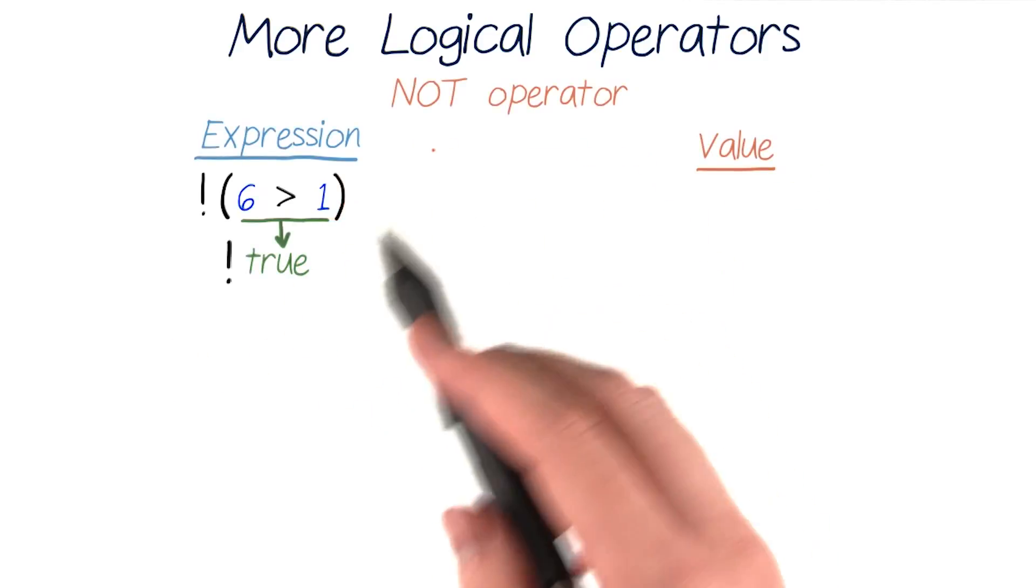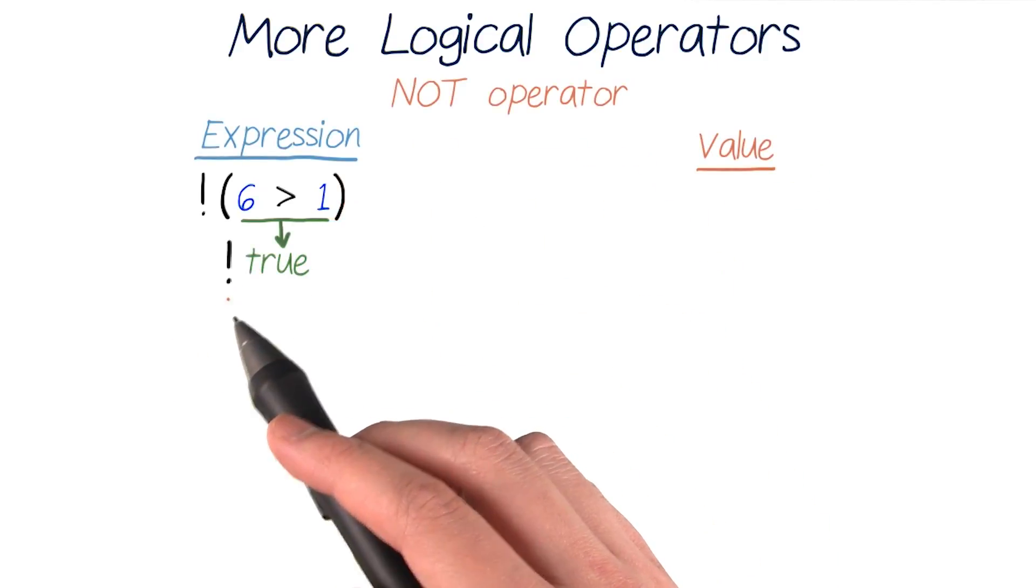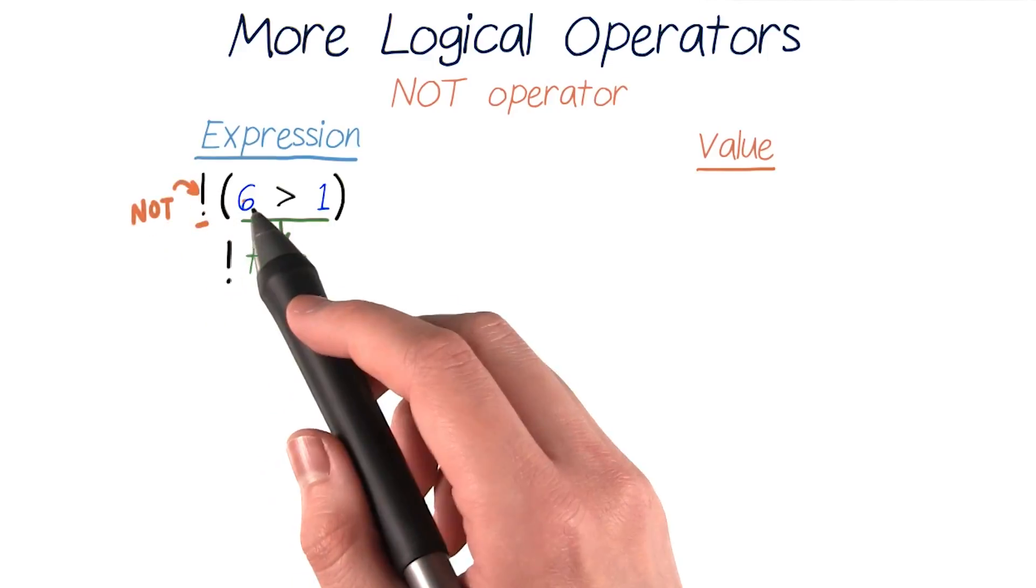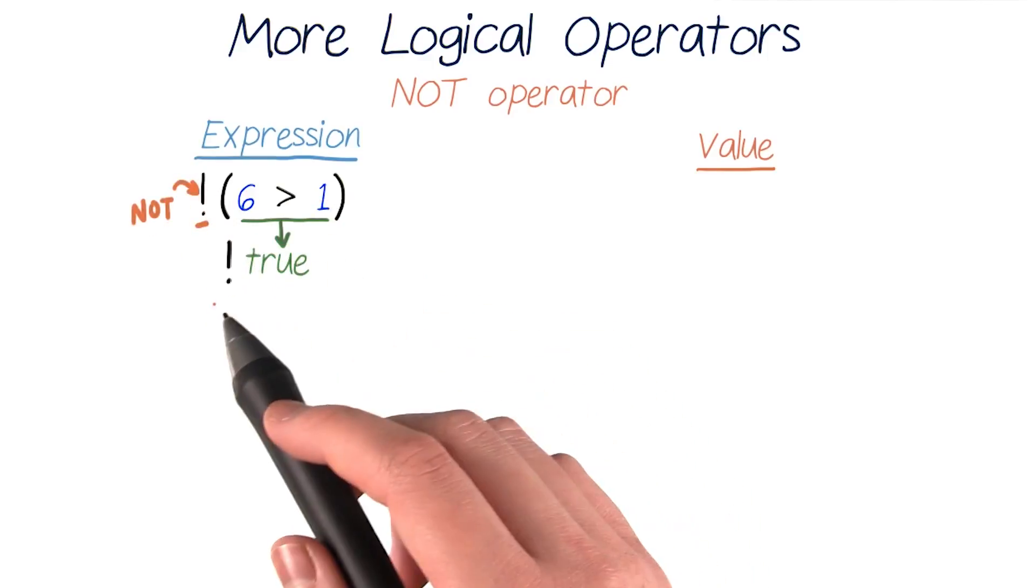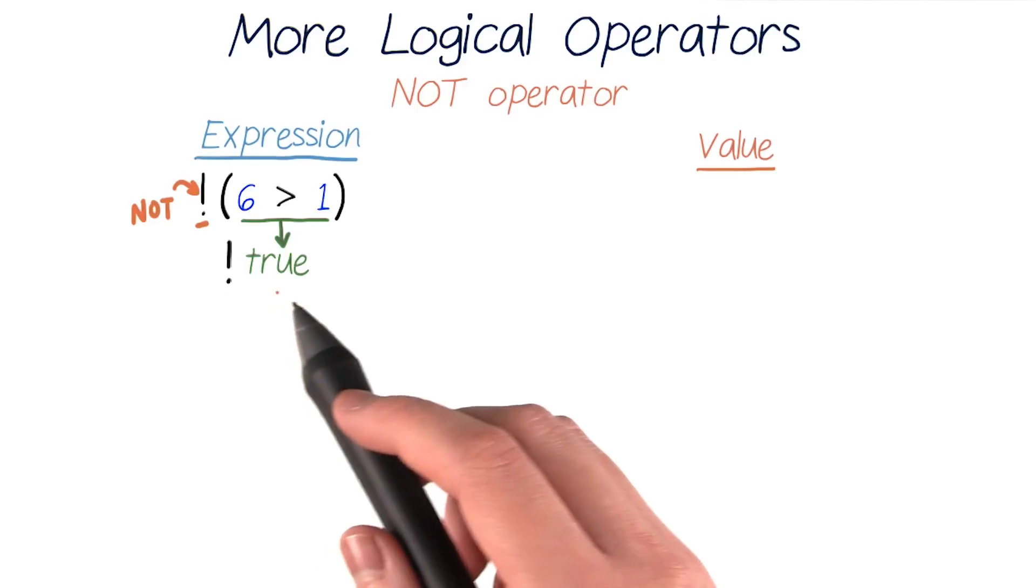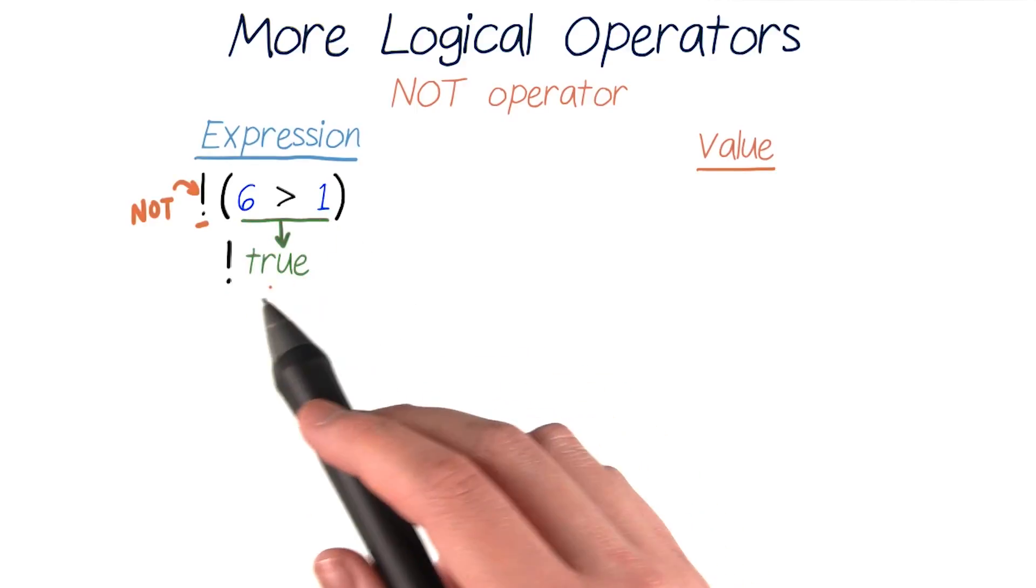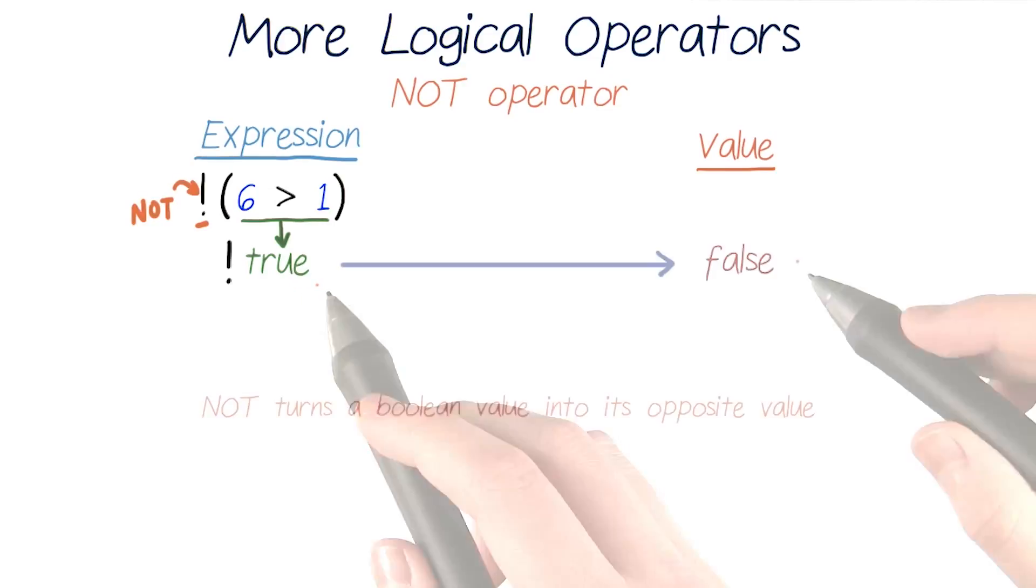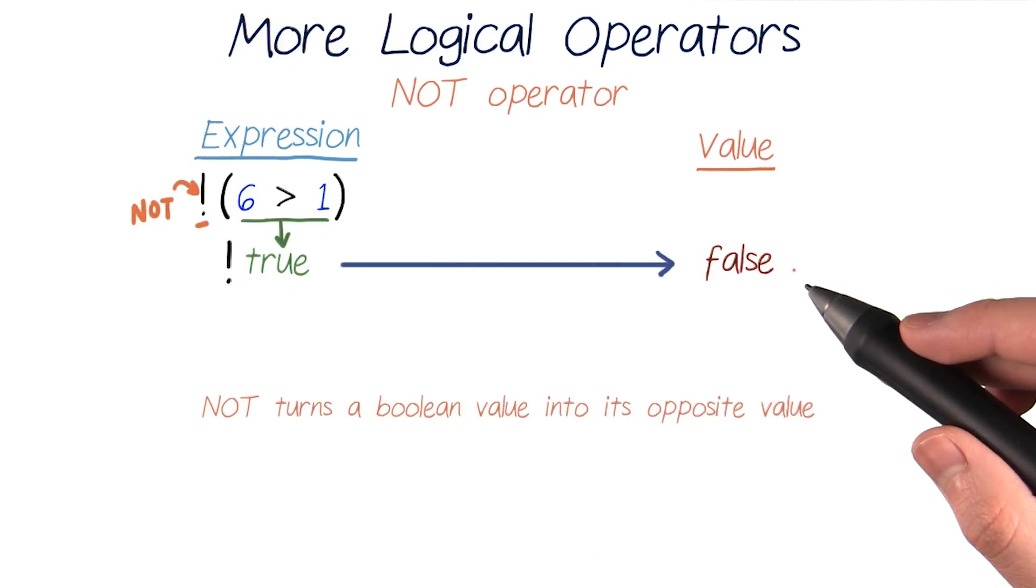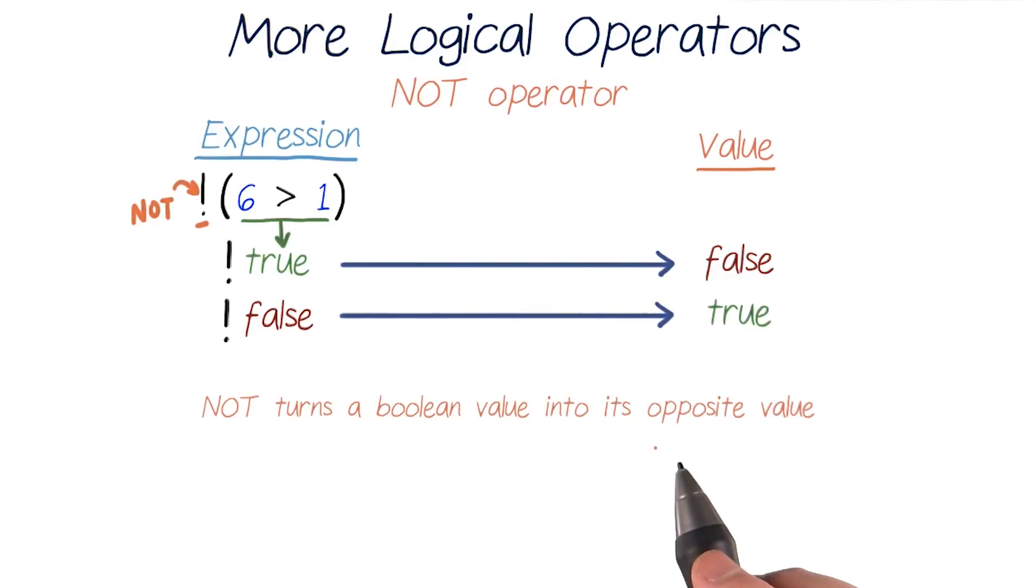Let's take the not operator, which is an exclamation point, as an example. The code not six greater than one is the equivalent of not true, because the expression six greater than one evaluates to the Boolean value of true. Both expressions evaluate to false, because the not operator turns whatever Boolean value it operates on into its opposite value. So not true becomes false, and not false becomes true.